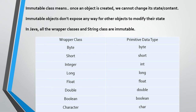By the end of this video you'll understand completely what is an immutable class and how to create a custom immutable class. In Java there are already built-in immutable classes like wrapper classes — there are eight wrapper classes, all immutable. Once we create the object of those classes we cannot change the content. The String class is also immutable; once we create an object of String we cannot change its content.